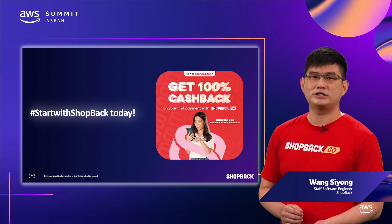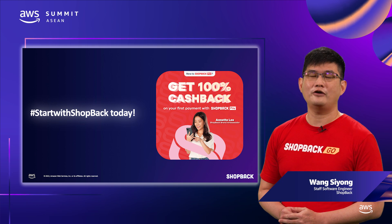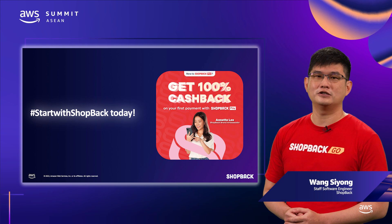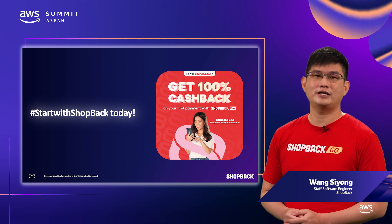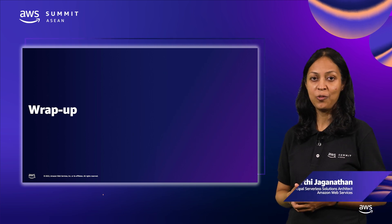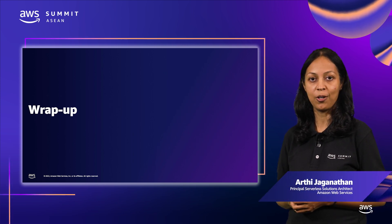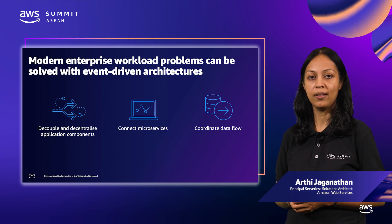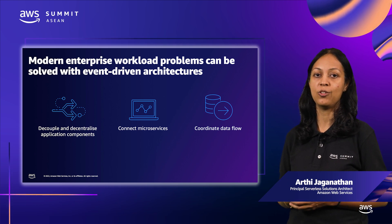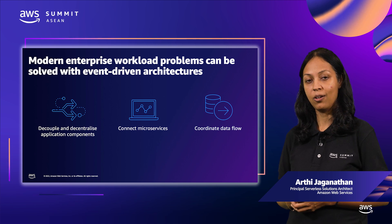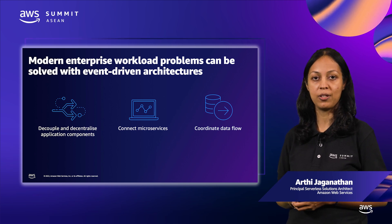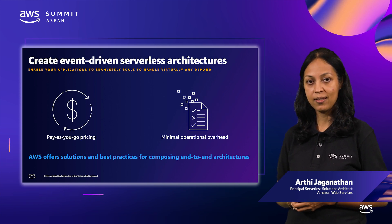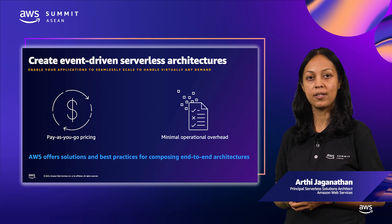That concludes the ShopBack presentation. You've seen how using async can dramatically reduce complexity and the pros and cons of using EventBridge. In this session, we started with the benefits of asynchronous integration, then looked at event-driven architecture patterns to decouple applications, and finally a real-world implementation of an event-driven microservices architecture at ShopBack. We also discussed AWS integration services and design considerations for choosing the appropriate service.